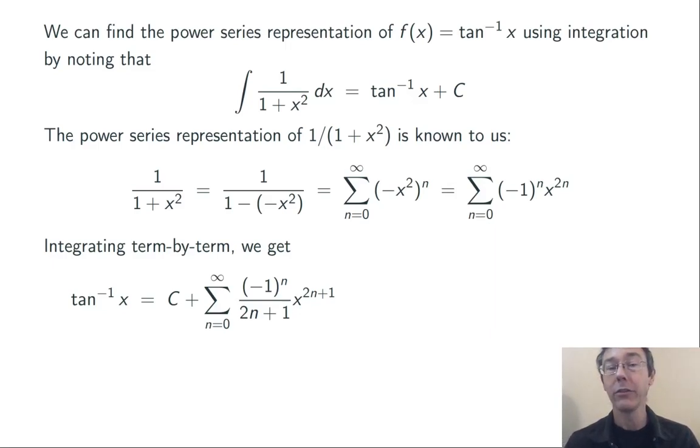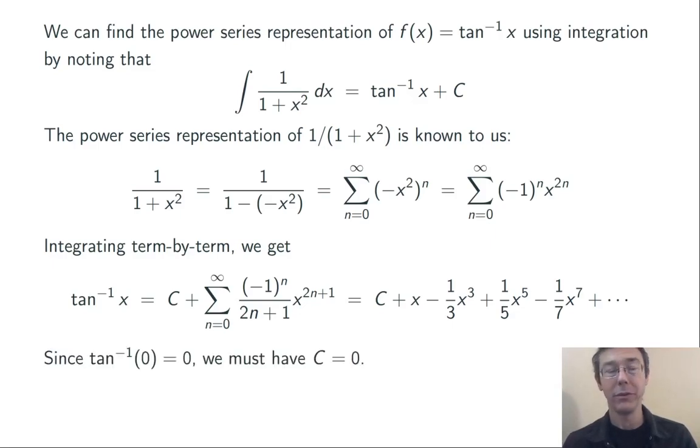We know tan inverse of 0 at the center of the power series, at x equals 0. So tan inverse of 0 is 0. That lets us find that c has to be equal to 0 here.